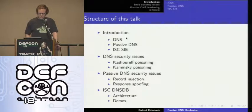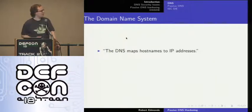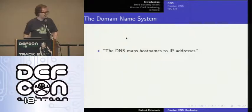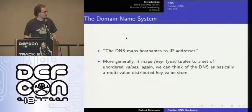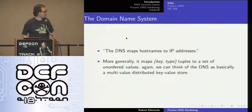This is the structure of the talk — there are four parts. The DNS maps hostnames to IP addresses; this is generally what we consider it to be. But in fact it's more of a generalized system — basically a distributed key-value system. More generally, it maps key-type tuples to a set of unordered values. So basically a multi-value distributed key-value store.